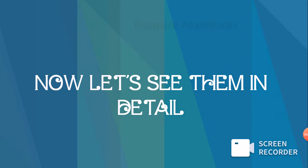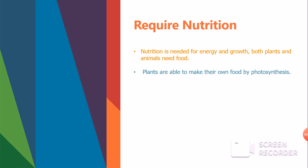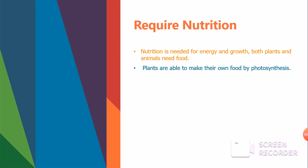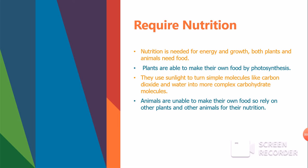First, let's look at nutrition. Nutrition is needed for energy and growth. Both plants and animals need food to live and do work. Our body requires nutrition, so getting nutrition is essential. Plants are able to make their own food through photosynthesis, using sunlight to turn simple molecules like carbon dioxide and water into complex food molecules like carbohydrates.